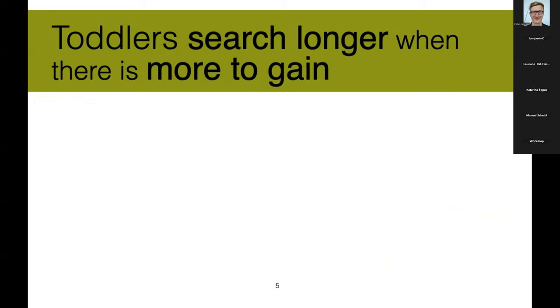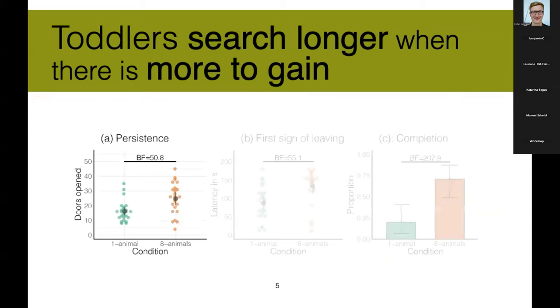So although Sam, the hidden animal was never really revealed, regardless of the time children spent searching, our results indicate that children were more persistent in their search in the eight animals condition, which is in orange here, when there was higher uncertainty as which animal they would be able to find, and therefore more information to be gained. So they open more doors on average, and they search for a longer time.